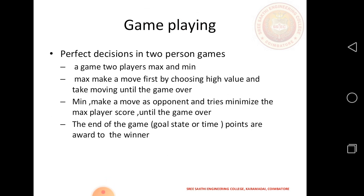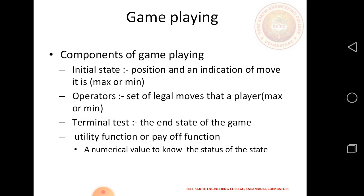The perfect decision is a 2-player game. The game has two players: maximum and minimum. Maximum makes a move first by choosing the highest value and keeps moving until the game is over. Minimum tries to minimize the maximum player's score until the game is over. At the end of the game, the goal state awards a score to the winner.